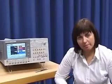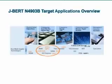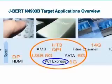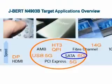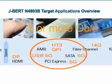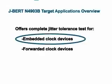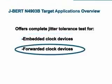Here is a view of the high-speed markets and technologies that can be addressed by Jaybird. The latest versions of the standards now approach the 5 gigabit data rate range. QuickPath Interconnect, PCI Express Generation 2, USB SuperSpeed, and Serial ATA are all running around 5 or more gigabit. And Jaybird, a high-performance serial BERT, offers complete jitter-tolerance testing for both embedded clock devices and forwarded clock devices.